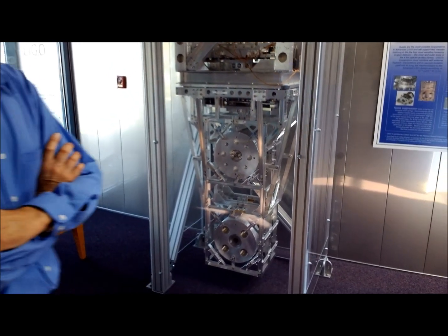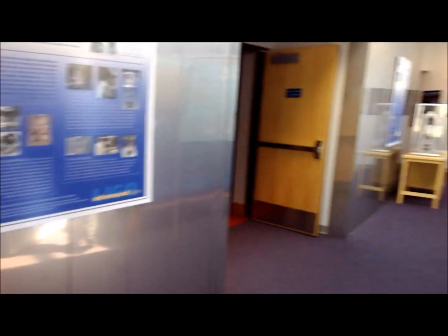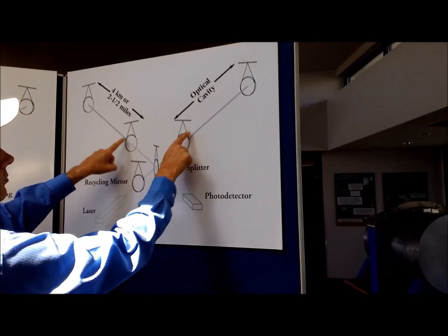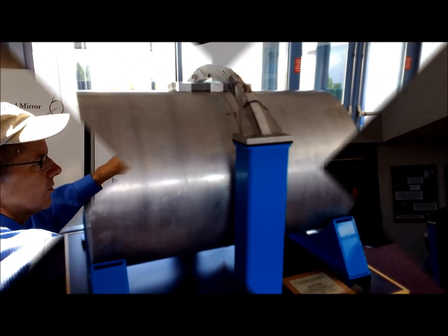So these would be sitting on advanced LIGO at the end of the arms or in the center? At the end of the arms and then in these interior chambers that are adjacent to the beam splitter. These are the four most delicate locations in the instrument.